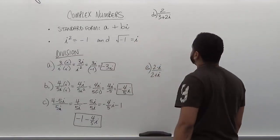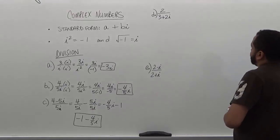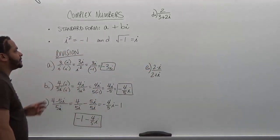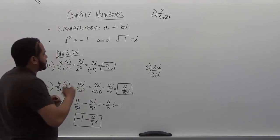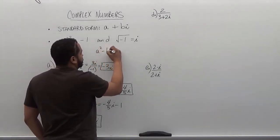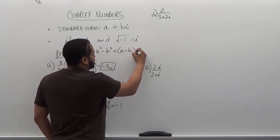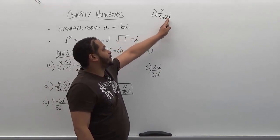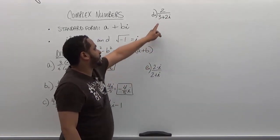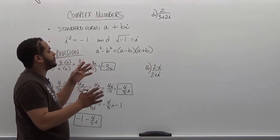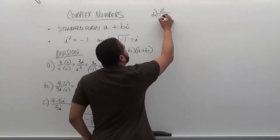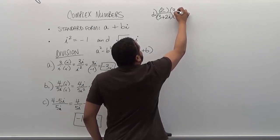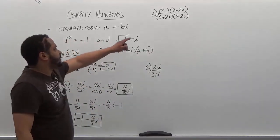Let's move on to the fourth problem. We have two divided by three plus 2i. To complete this rationalization, since the denominator has a binomial, we use the conjugate pair. The conjugate pair comes from the difference of two squares formula: (a − b)(a + b). In this case we have three plus 2i, so we need the negative term — three minus 2i — to create the difference of two squares. So we multiply top and bottom by three minus 2i.